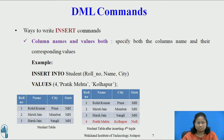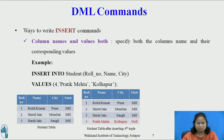For example: INSERT INTO student (rollnumber, name, city) VALUES (4, 'PratikMetah', 'Kolapur'). Notice that the columns for which values are not provided are filled by NULL, which is the default value for those columns, as shown in the student table after inserting the 4th tuple.